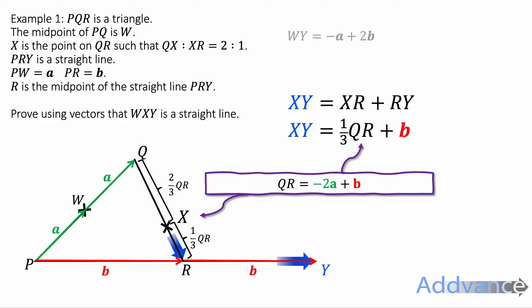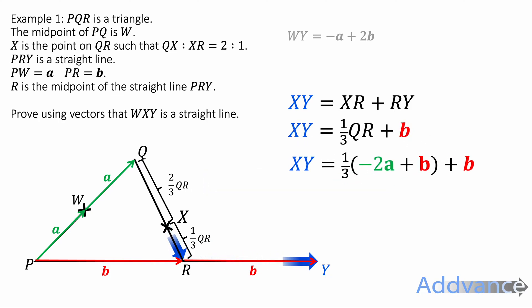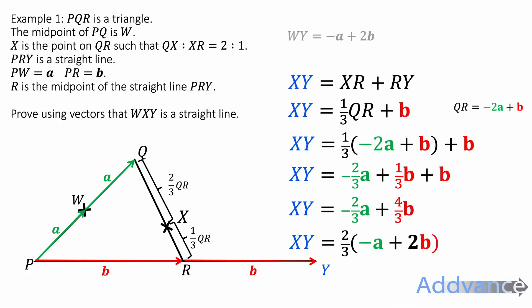So we can substitute that in like this. We can then expand the brackets and then we can simplify. A third of b plus b is four thirds b. We can factorise out two thirds from this entire expression. And so we can write that entire expression as two thirds times minus a plus 2b. We're doing that because we want to make it parallel to the original vector. We can only do that if we factorise out the fraction.